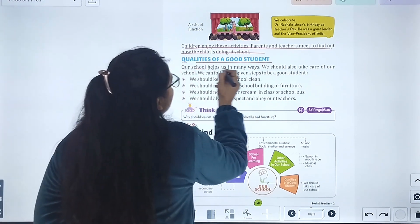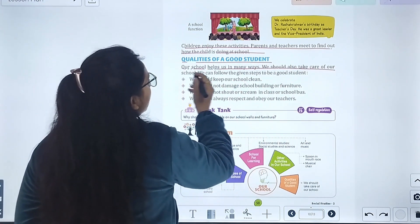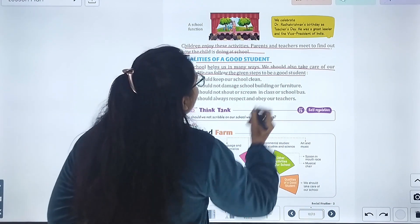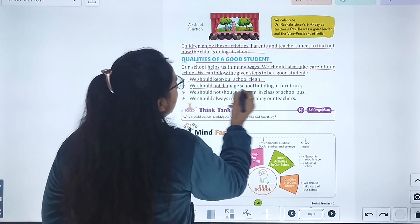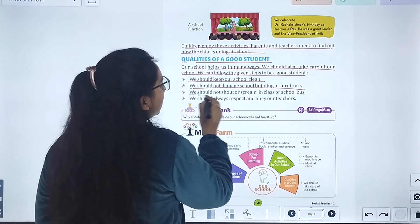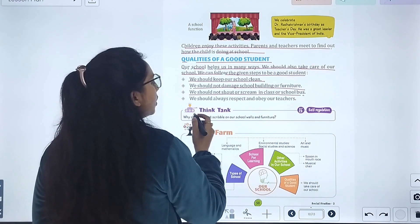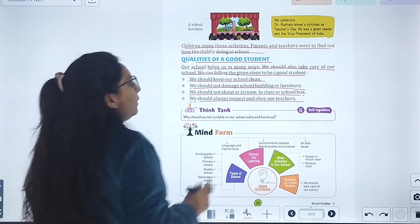Qualities of a good student: our school helps us in many ways. We should take care of our school. We can follow the given steps to be a good student. We should keep our school clean. We should not damage the school building. We should not shout or scream in class or school bus.